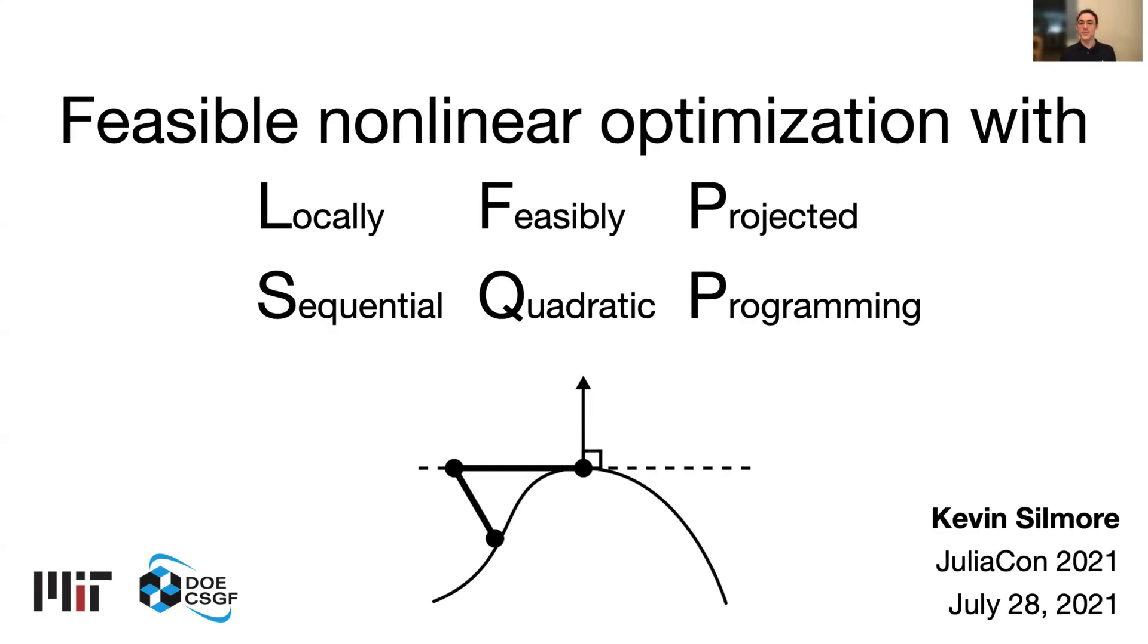Hi, my name is Kevin Silmore. I'm a grad student in chemical engineering and computation at MIT, and today I plan to tell you very briefly about a tool we made to perform feasible nonlinear optimization called LFP-SQP.